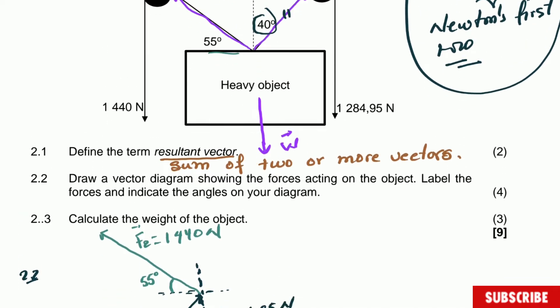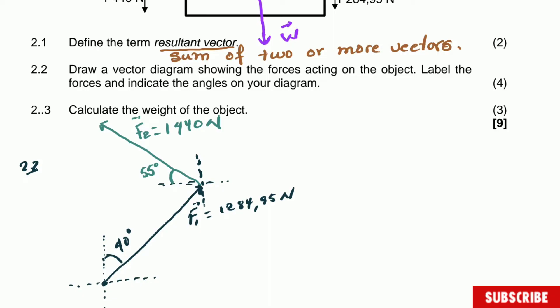If the angle from the y-axis is 40 degrees, then the angle from the x-axis is 90 minus 40 = 50 degrees. Because of alternating angles between parallel lines, that angle is also 50 degrees on the other side. Therefore, the angle between the two forces is 50 + 55 = 105 degrees.